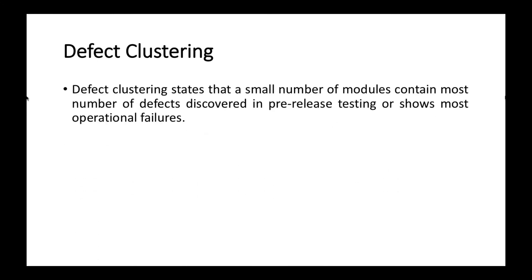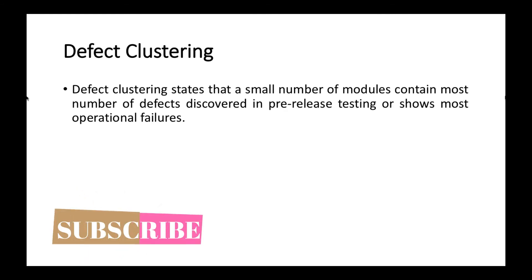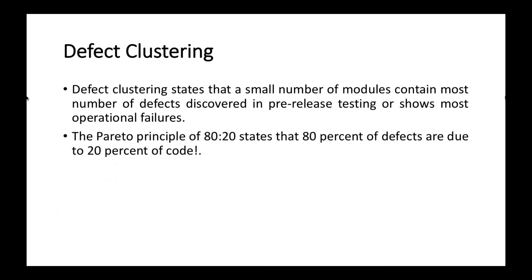The next principle is defect clustering. Defect clustering states that a small number of modules contain most of the defects discovered in pre-release testing or show most operational failures. There can be one module which contains more defects than any other module in the whole application. The Pareto principle of 80/20 states that 80% of defects are due to 20% of the code.